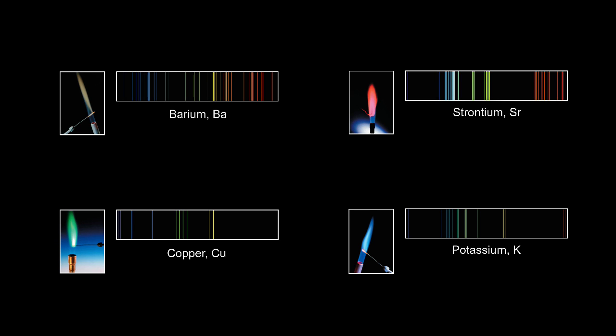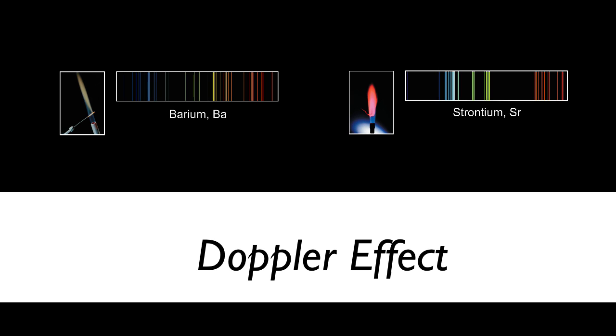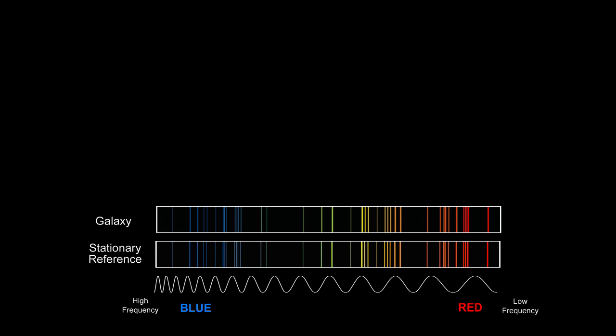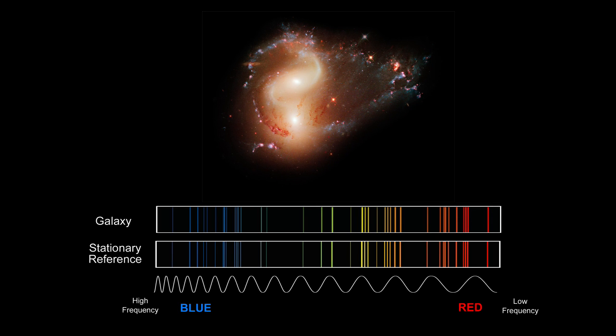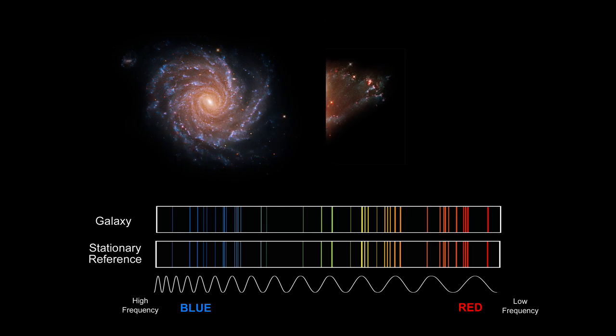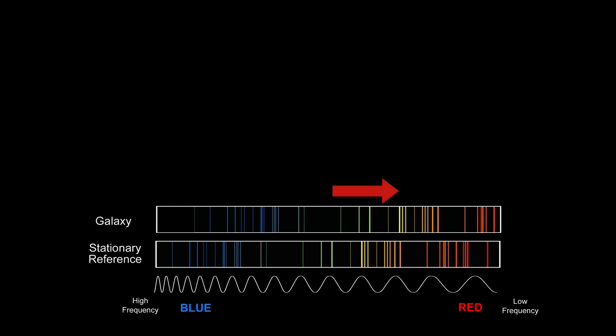What we find is that the spectral pattern for each galaxy shifts to some lower frequency. This is the result of the Doppler effect. Just as the siren of a receding fire truck has a lower frequency, lower pitch, as it moves away from you, light also shifts to a lower frequency as the light source moves away from you. The faster the source moves away, the more the shift to lower frequencies.